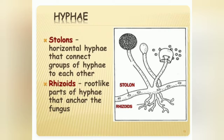In this slide you can see structures called stolons and rhizoids. Stolons are horizontal hyphae that connect groups of hyphae to each other. Rhizoids are root-like parts of hyphae that anchor the fungus.